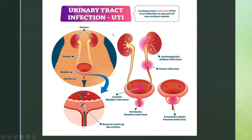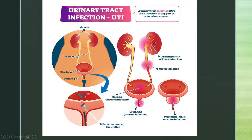Urinary tract infection is an infection in any part of your urinary system. The urinary system includes the kidneys, ureter, urinary bladder, and urethra. Wherever the infection occurs in this system, we call it urinary tract infection. Bacteria travel through the urethra up to the ureter and cause infection.